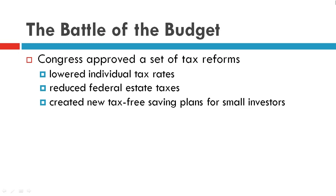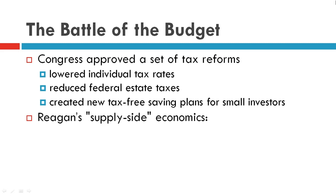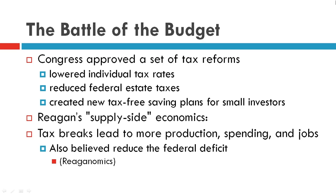These reforms reduced federal estate taxes and created a new tax-free savings plan for small investors. This is the supply-side Reaganomics I was referring to before — these tax breaks are essentially a trickle-down approach. It was believed that this would give the wealthy and industry more money to increase production and spending.